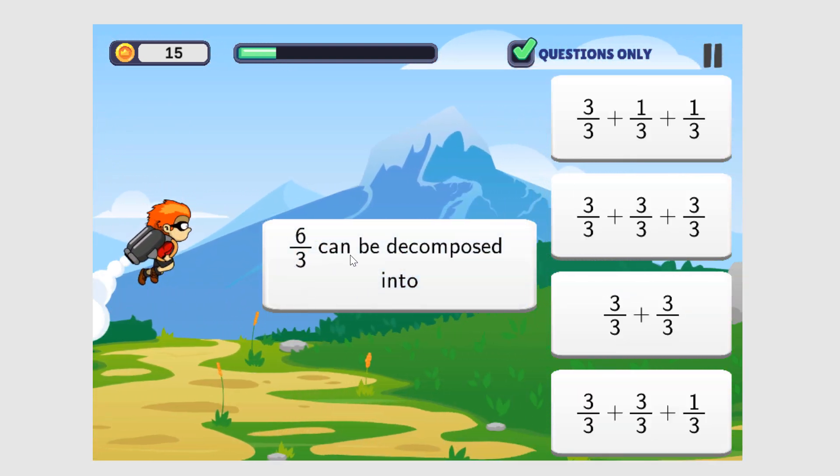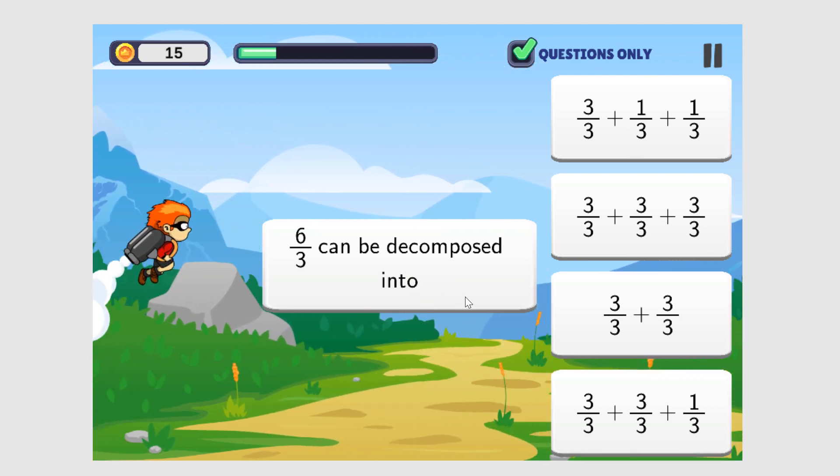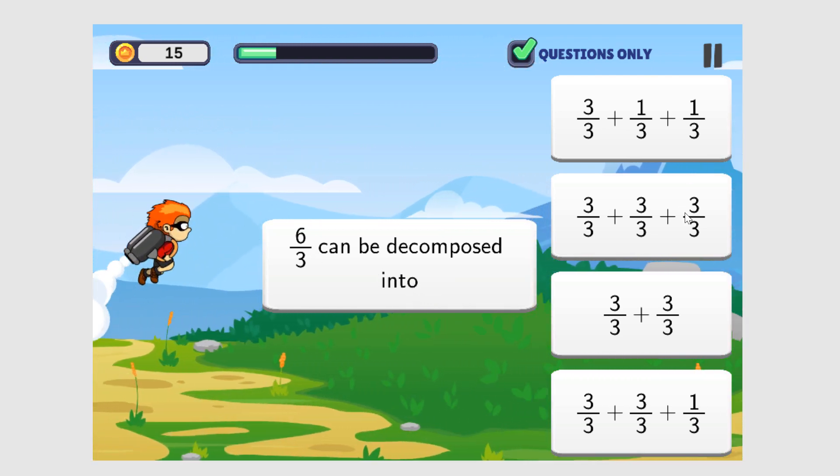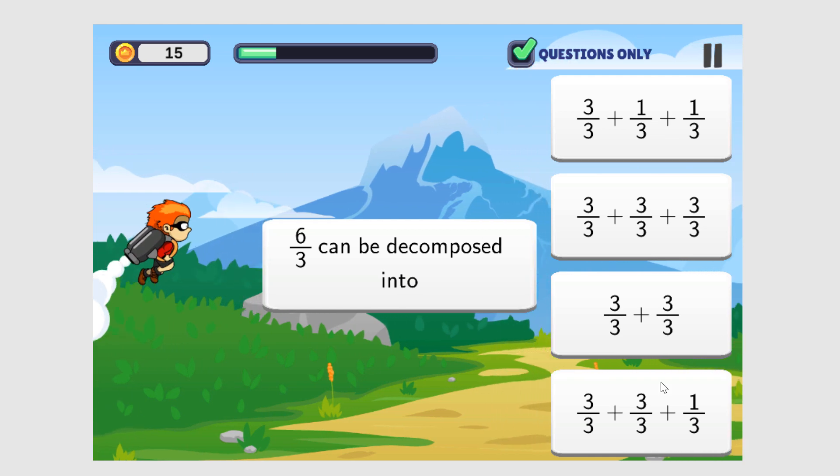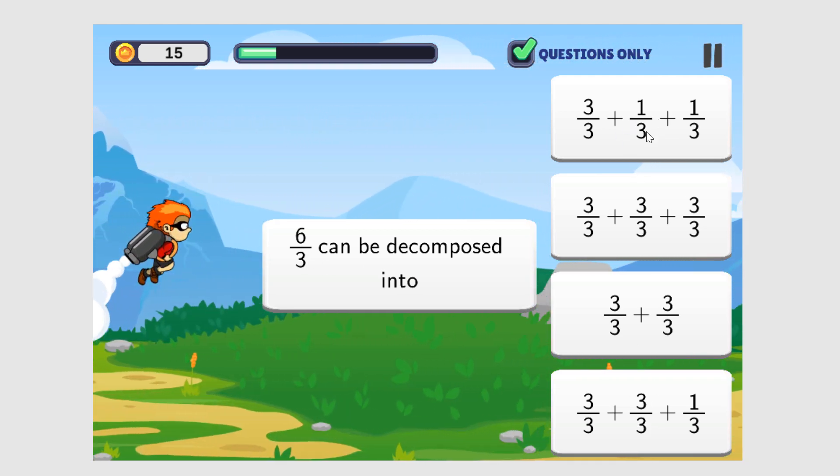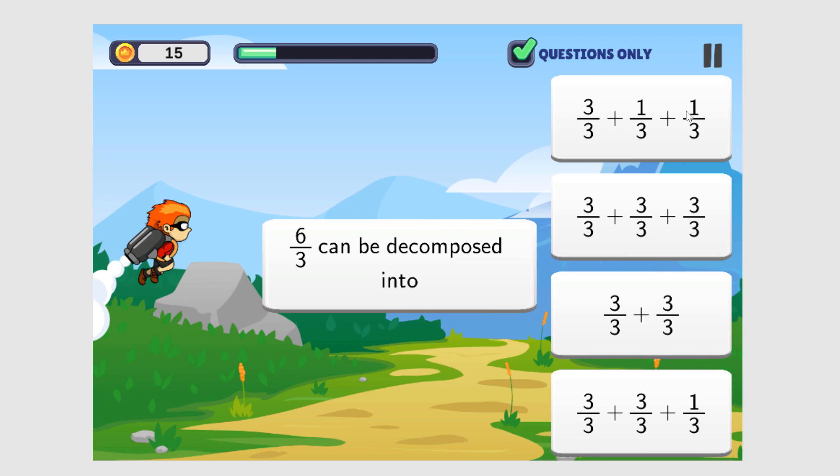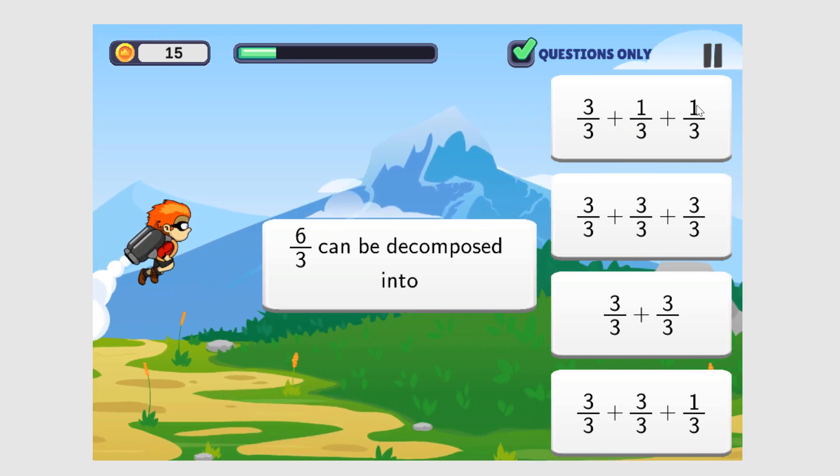Six-thirds can be decomposed into... We'll find out which one of these sums will equal six-thirds. Three plus one plus one is five, five-thirds. That's not right.